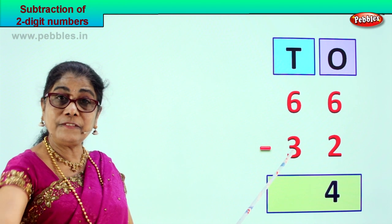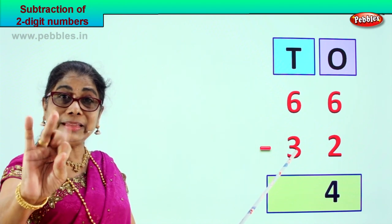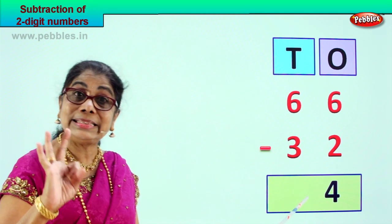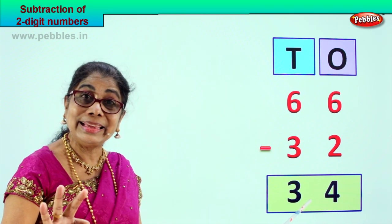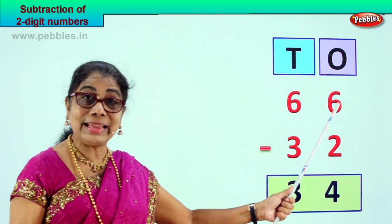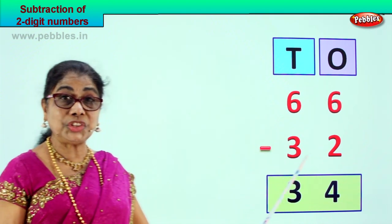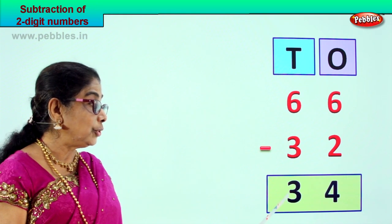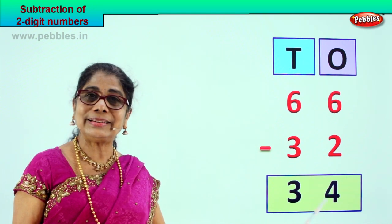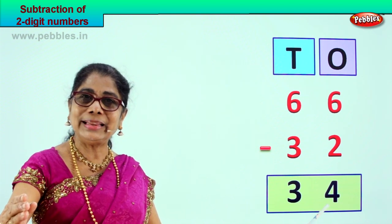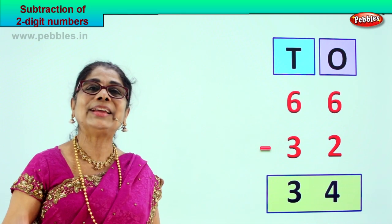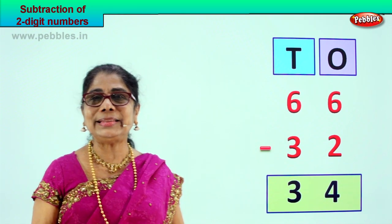Now let's go to the tens place. Six take away three — six minus three: three, four, five, six — six minus three is three. So sixty-six minus thirty-two gives you the answer thirty-four. Did you enjoy two digit subtraction? Shall we take another sum?